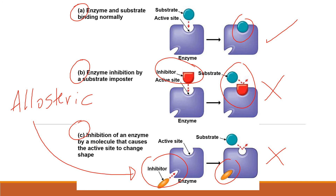Another example is cancer drugs — they are also inhibitors that inhibit enzymes that help your cells divide. By inhibiting those enzymes, that stops the cancer cells from dividing, which is actually a good thing. There are also toxins that are inhibitors; those toxins inhibit essential enzymes inside your body from working and can cause severe damage.